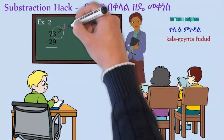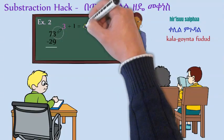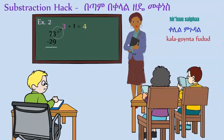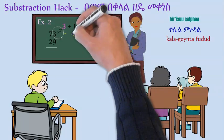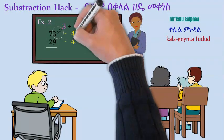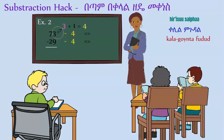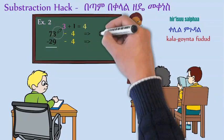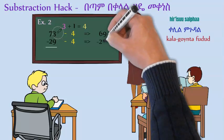Take three, add one to it. Then you'll get four. Then subtract that four from 73 and also four from 29. We will get 69 and 25.